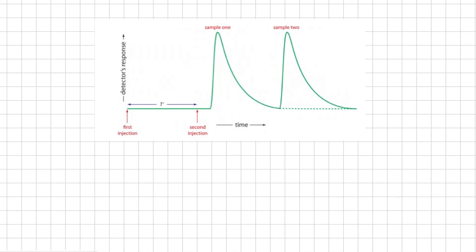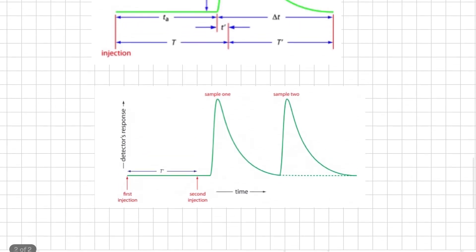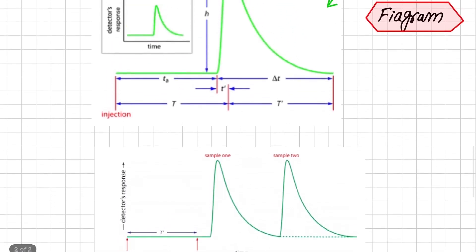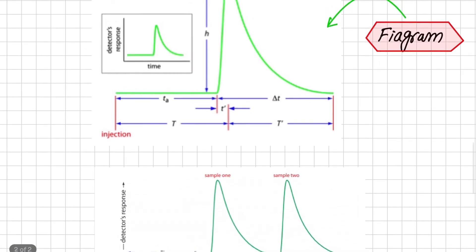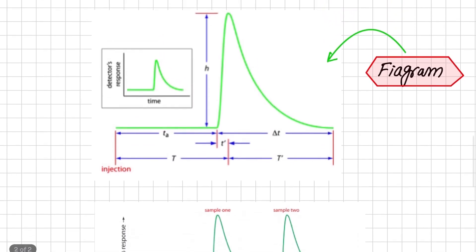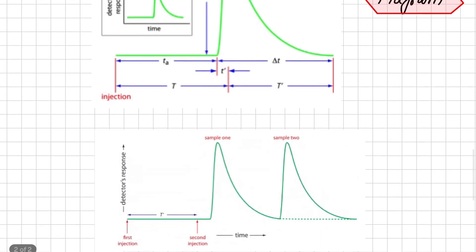Peak height and return time are influenced by the dispersion of the sample's profile and by the physical and chemical properties of the flow injection system. Physical parameters affecting peak height and T′ include the volume of the sample injected, the flow rate, the length, diameter, and geometry of the mixing and reacting zones, and the presence of mixing points between separate merged channels. The kinetics of any chemical reaction between the sample and the reagents in the carrier stream also influence peak height and return time. In any FIAgram, we mainly focus on these two parameters: peak height and return time.